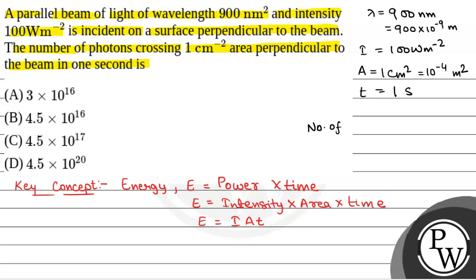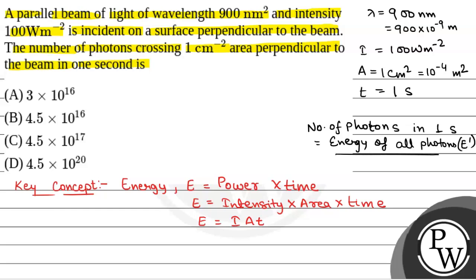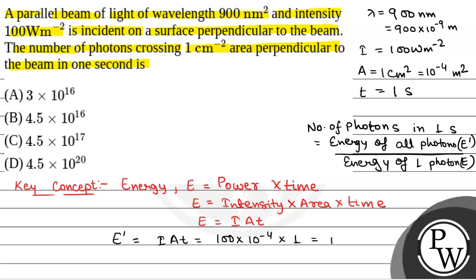Number of photons in 1 second: that will be equal to energy of all photons divided by energy of one photon. The energy of all photons equals intensity into area into time, that will be equal to 100 into 10 to the power minus 4 meter square into 1 second, which gives 10 to the power minus 2 joule, that is equal to 0.01 joule.